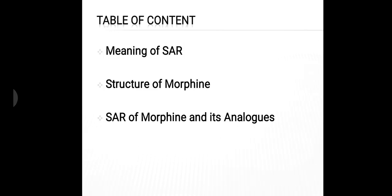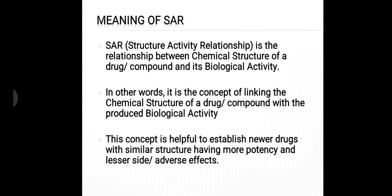Firstly, we will talk about the meaning of SAR, structure of morphine, and then finally we move on to SAR of morphine and its analogs. Structure-activity relationship is the relationship between the chemical structure of a drug or compound and its biological activity. In other words, it is the concept of linking the chemical structure of a drug with the produced biological activity, and this concept is helpful to establish newer drugs with similar structure having more potency and lesser side effects.